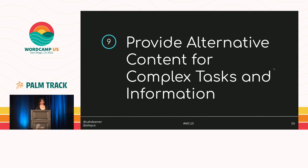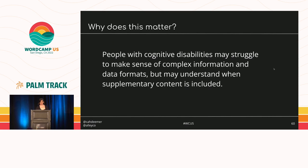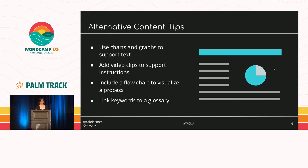Our ninth solution is to provide alternative content for complex tasks and information — help users complete tasks on their own by presenting information in different formats. Complex information can present a significant barrier to people with cognitive disabilities, but supplementary content can help. Some people have impairments affecting numbers but not language; others have language impairments but may not understand numbers. You can use charts and graphs to support text, add video clips to support instructions, include a flow chart to visualize a process, and link keywords to a glossary.